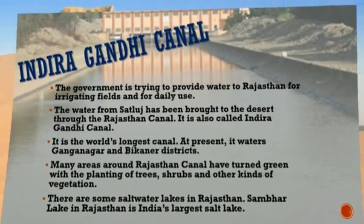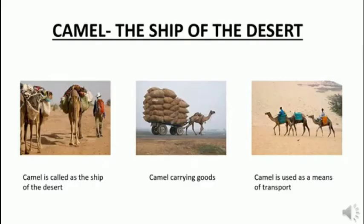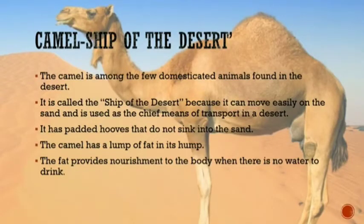Next we are going to learn about the camel, the ship of the desert. The camel is among the few domesticated animals found in the desert. It is called the ship of the desert because it can move easily on the sand and is used as the chief means of transport. Its padded hooves do not sink into the sand. No other animal can move easily in the sand. Even when we put our leg on sand it goes inside, like at a sea beach.